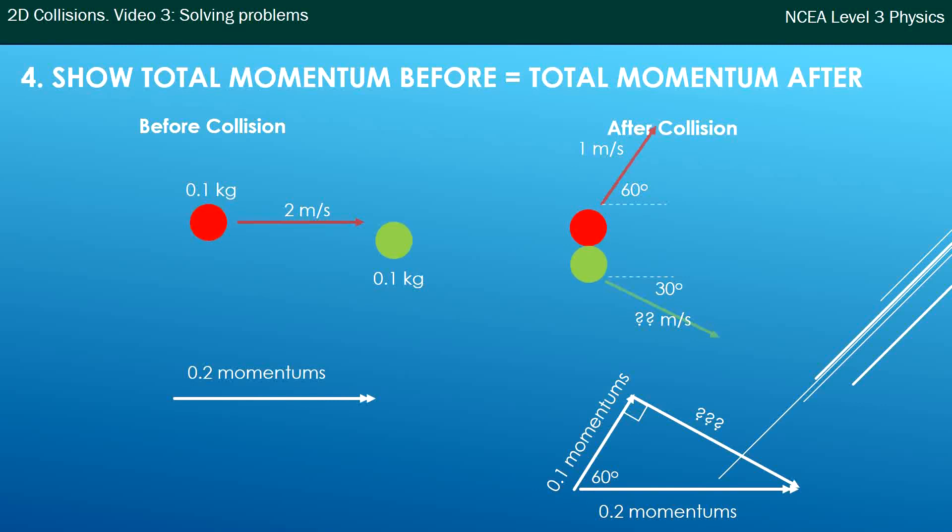It's the law of conservation of momentum: afterwards I must have 0.2 as well, which is directly to the right.